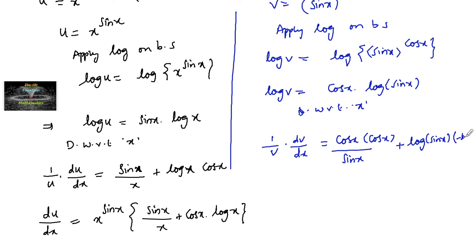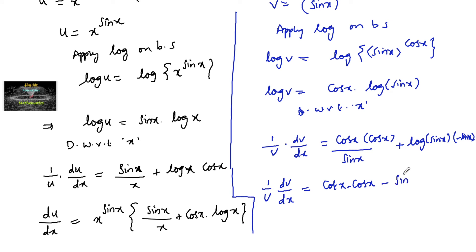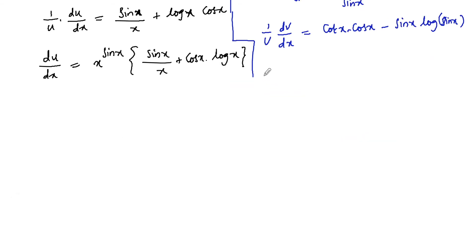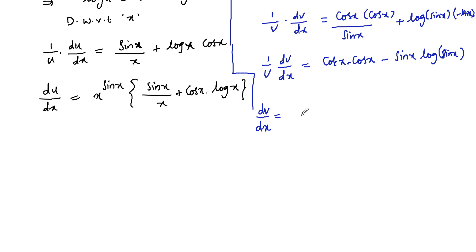That gives us 1 upon v into dv/dx = cos x by sin x into cos x minus sin x into log of sin x. Since cos x / sin x = cot x, we can write: cot x into cos x minus sin x into log of sin x. Therefore dv/dx = sin x to the power of cos x into (cot x · cos x minus sin x · log of sin x).